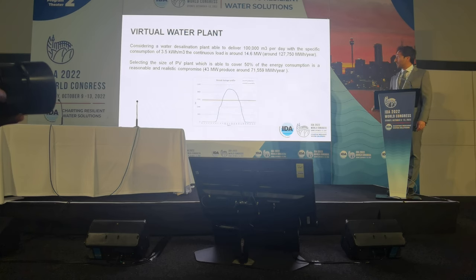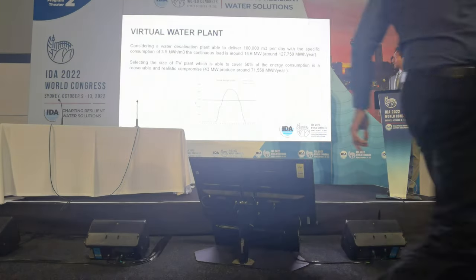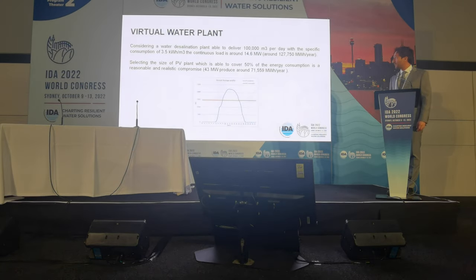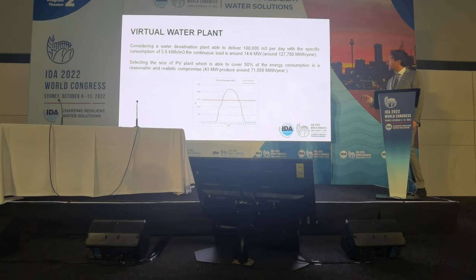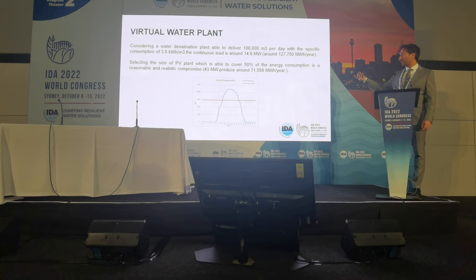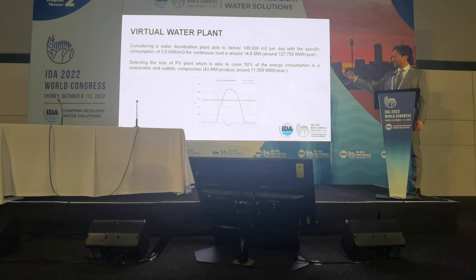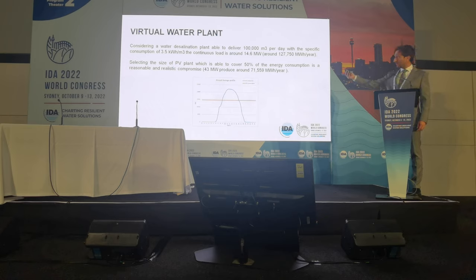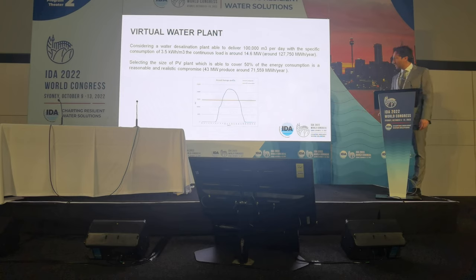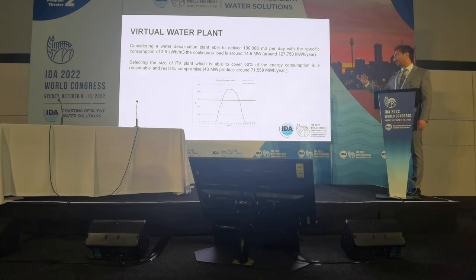As an example, a seawater RO plant of 100,000 m³ per day has around 15 MW of power, with a consumption of 1,027 MWh per year. Covering 50% of energy consumption — because we cannot oversize the PV plant, as it is the most available and simple technology to install — requires approximately 43 MW of PV. This is the annual average daily profile; the orange line shows PV generation and the overall consumption is assumed constant for simplicity.